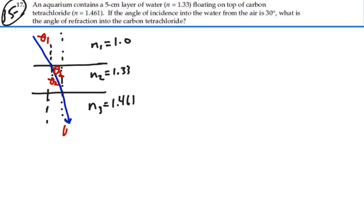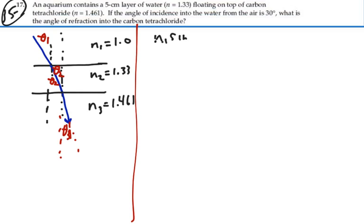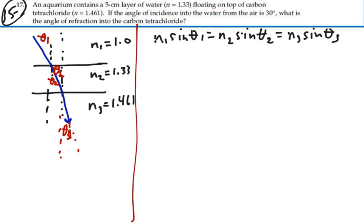And then I'll have a theta 3 for the angle as we go into the carbon tetrachloride. For each interface, Snell's Law will apply. So we'll have N1 sine theta 1 equals N2 sine theta 2. And for the fact that theta 2 is the same for the angle of refraction into the water as the angle of incidence into the carbon tetrachloride, we'll have Snell's Law at the second interface: N2 sine theta 2 equals N3 sine theta 3. So all these are the same, and I can relate N1 sine theta 1 directly to N3 sine theta 3.